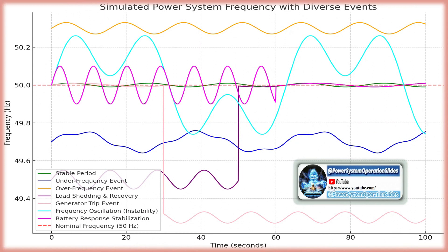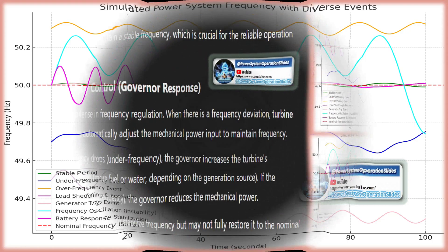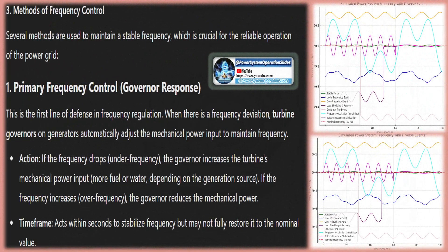For example, in the UK or India, appliances and electrical equipment are designed for 50 Hertz. If the frequency deviates from this, the appliances won't function correctly due to the narrow tolerance. Hence, maintaining a frequency close to 50 Hertz is essential.